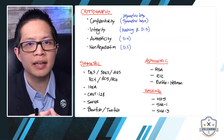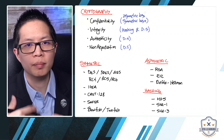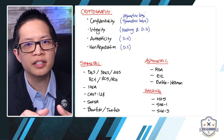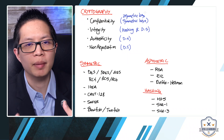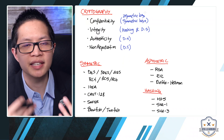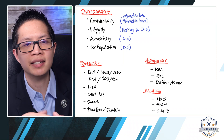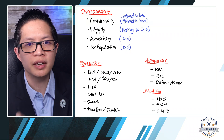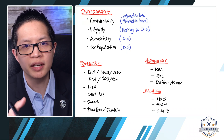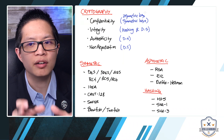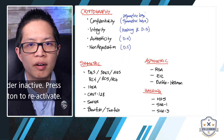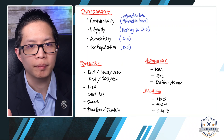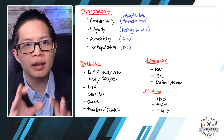Non-repudiation means that someone cannot deny doing something. If I send something to John and John receives it, he cannot deny receiving it. Similarly, I cannot say I didn't send that message — that's non-repudiation, and it's achievable with a digital signature. This module gives a high-level understanding of the areas cryptography addresses.